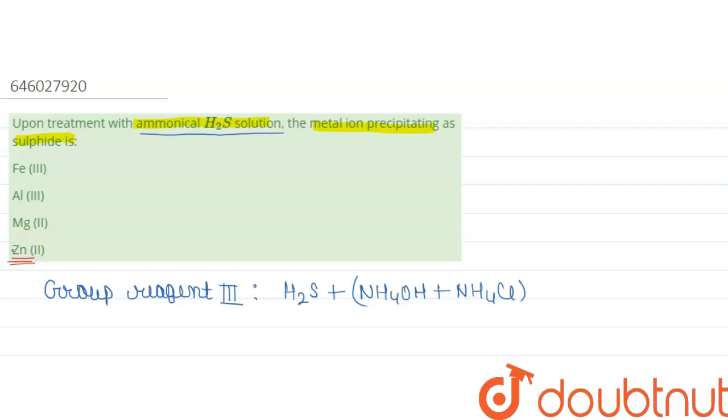So it will only precipitate zinc because zinc is present in the third group. Okay, so how does zinc